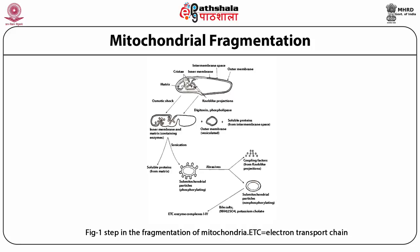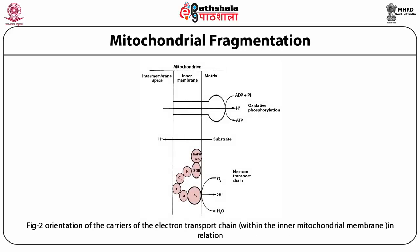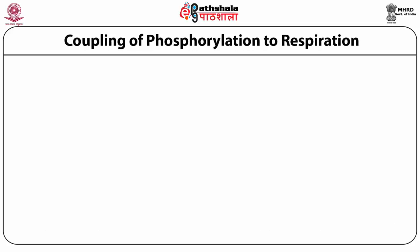Treatment of the transport chain fraction of the inner membrane with bile salt or potassium cholate, often used sequentially, breaks the fraction into the four complexes concerned with electron transport. These isolated complexes can be used to study electron transport in reconstitution experiments. The orientation of the enzymes of the electron transfer chain in relation to coupled oxidative phosphorylation is illustrated in the figure. Succinate dehydrogenase faces the mitochondrial matrix, from which it accepts electrons from succinyl-CoA synthetase of the TCA cycle. The cytochrome A to A3 complex likewise faces the matrix from where it obtains oxygen for the final step of the electron transport chain.